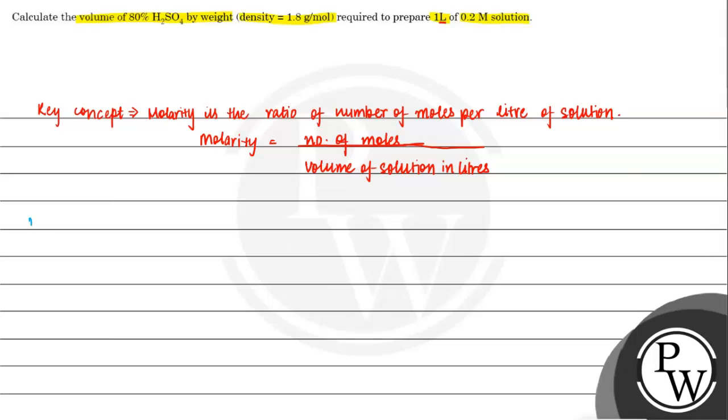So molarity of acid which is H2SO4 given in the question is 0.2 molar. It is given in the question itself, it is 0.2 molar. Volume of solution is given in the question also. Volume of solution is 1 liter. So we don't need to change this because it's already in liters.